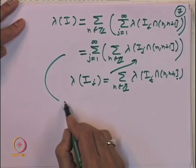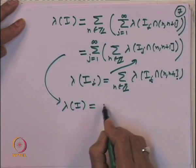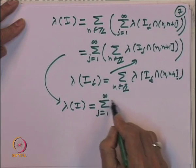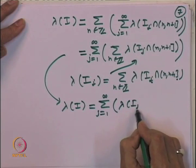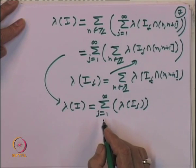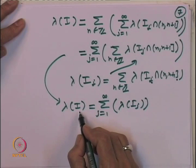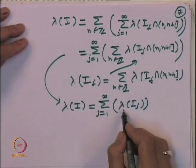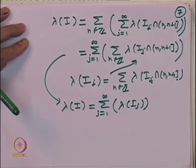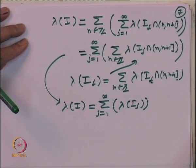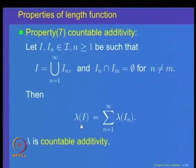This gives us the countable additive property: if an interval I is written as a countable disjoint union of intervals I_n, then the length of I equals the summation of lengths of I_n, whether the interval I is finite or infinite. The length function is therefore countably additive.